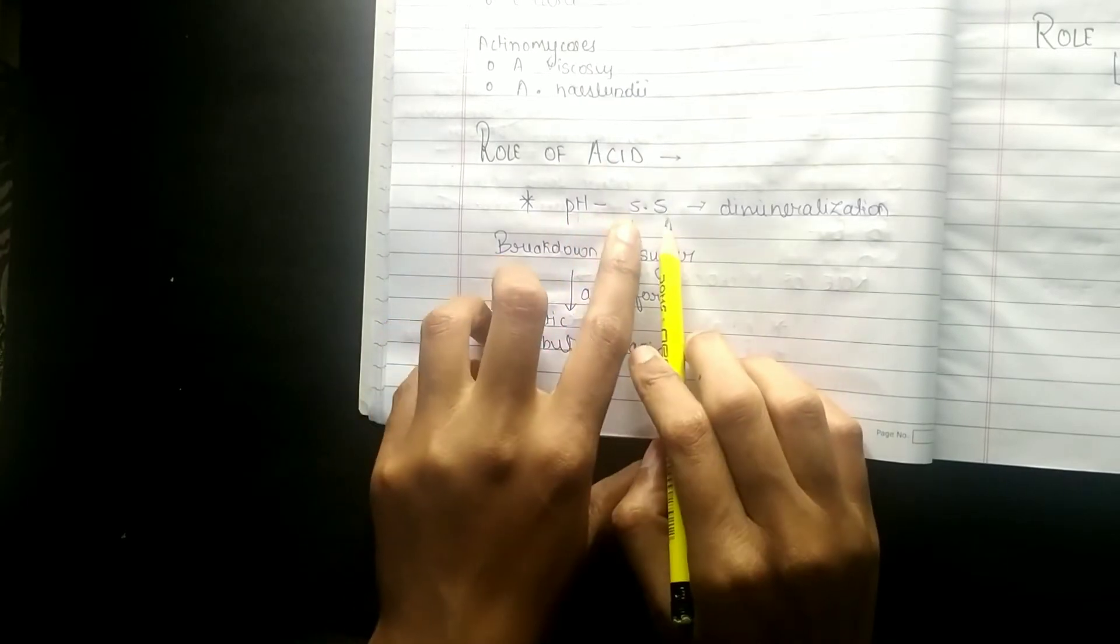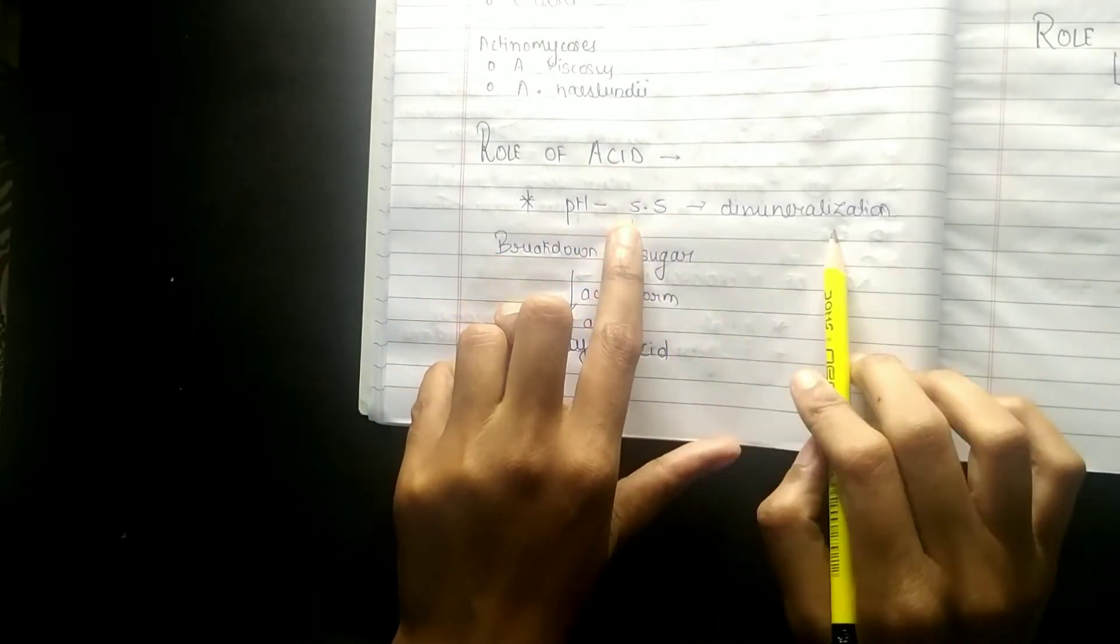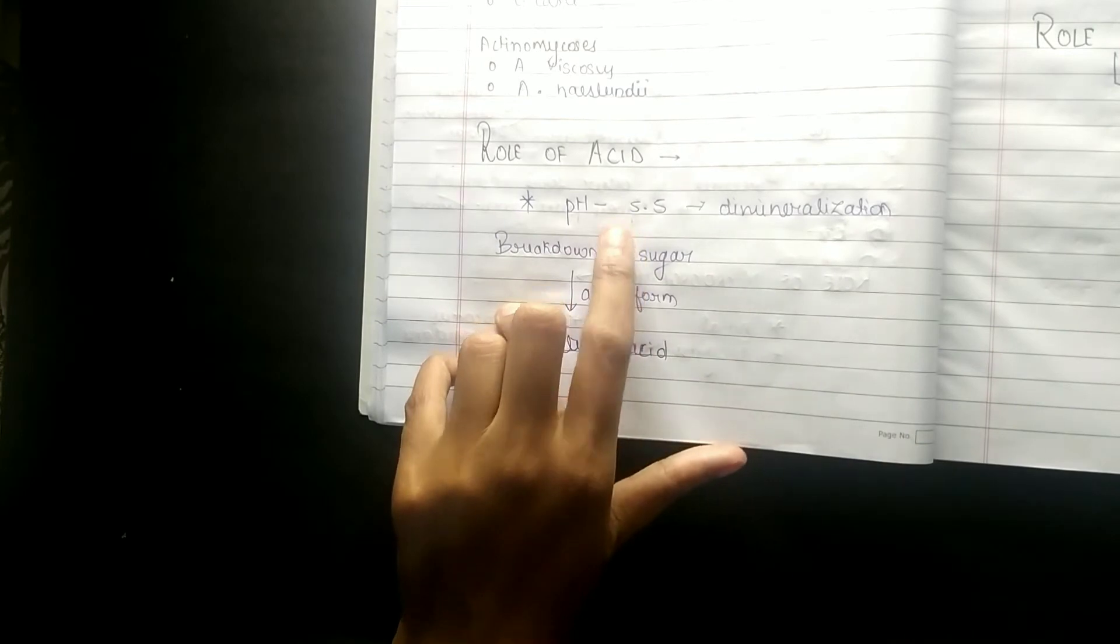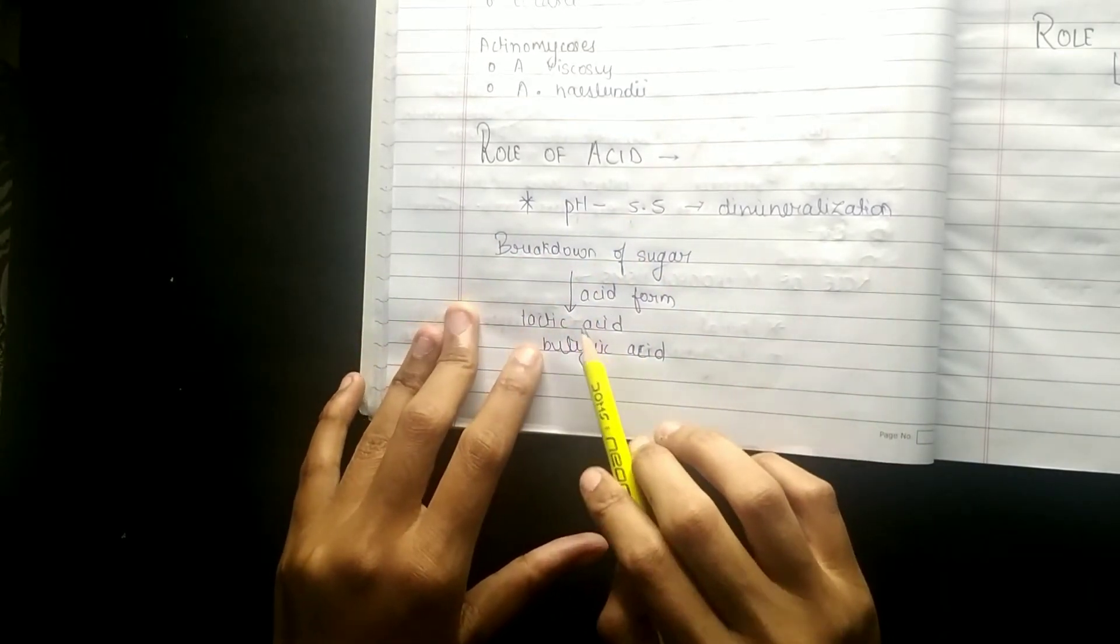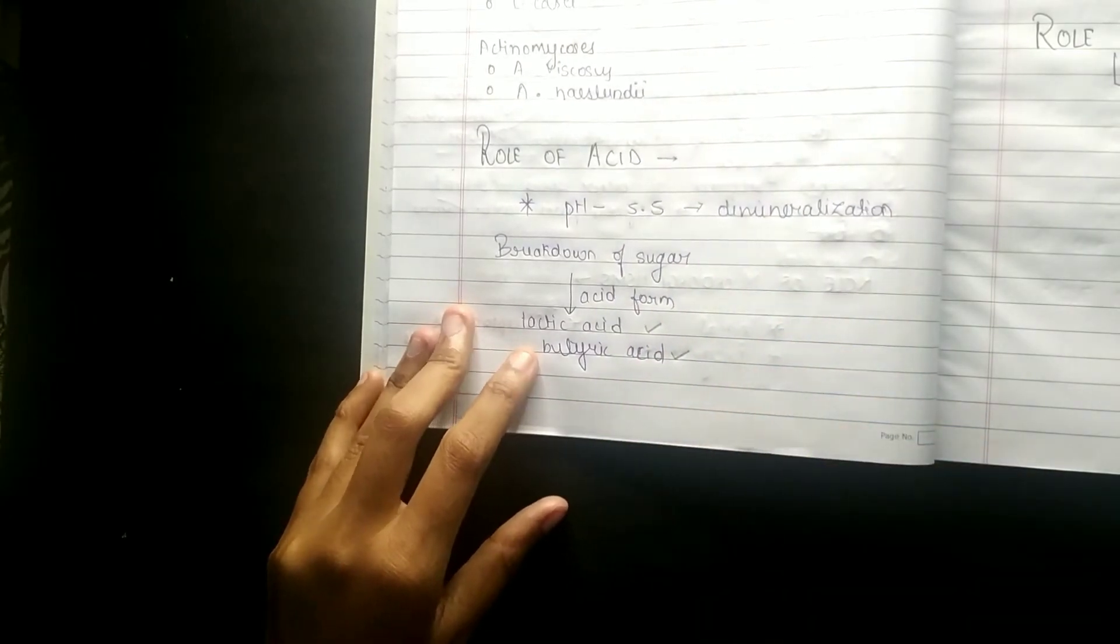pH 5.5 demineralization. Breakdown of sugar, acid formation - lactic acid and butyric acid.